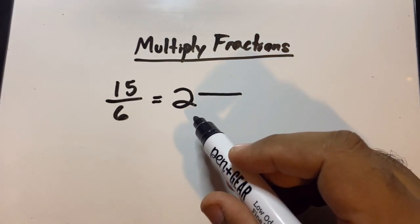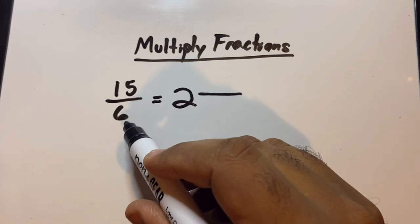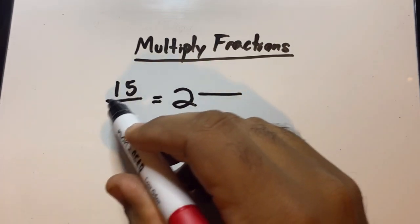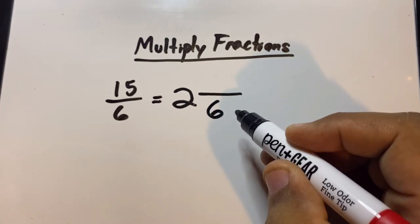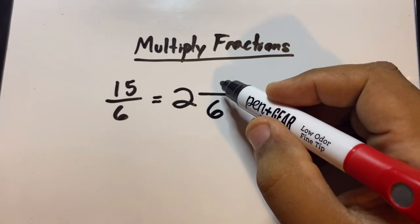And this makes it easy. Now when we're converting, the denominators, which is the bottom numbers, does not change. So over here it would also be a six. Now we have to figure out what goes up here.